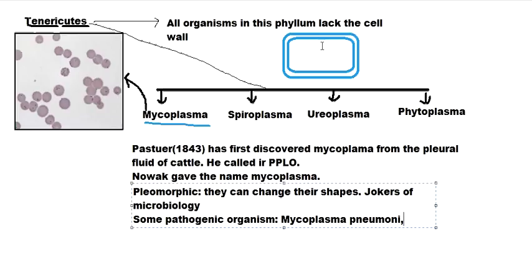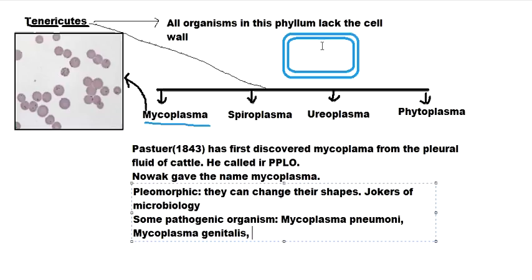Mycoplasma is obviously not a part of the vaginal flora. Mycoplasma genitalis and Mycoplasma hominis cause pleuropneumonia. These are the important pathogenic Mycoplasma species to remember.